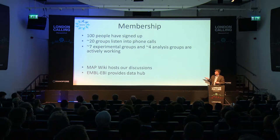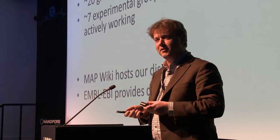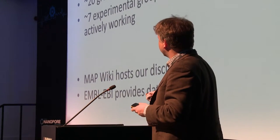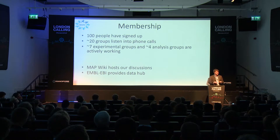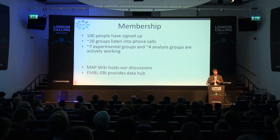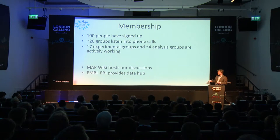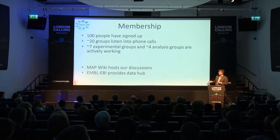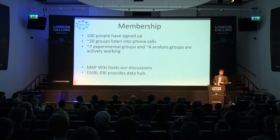Those are the basic ground rules. About 100 people have signed up looking at the wiki. About 20 groups phone in on Mondays, and about seven experimental groups and four analysis groups are actively working. The MAP wiki hosts our discussion, and EMBL EBI provides the data hub so that we have all the data processed and the metadata organized.